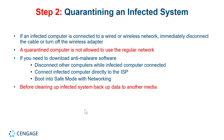Step two: quarantine the infected system. Get it off the network — immediately disconnect it from wired or wireless. A quarantined computer is not allowed to use the regular network, limiting the chances of a worm spreading. If you need to download anti-malware software, disconnect the other computers while the infected computer is connected to the internet. Boot into safe mode with networking for a better chance the virus software isn't active. You can put the antivirus software on a memory stick — but then do not plug that USB stick into anything else unless you format it first.